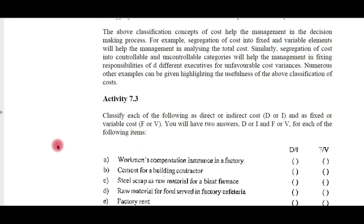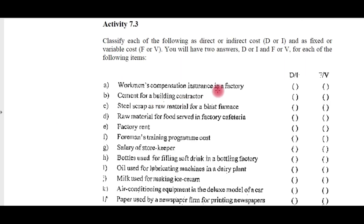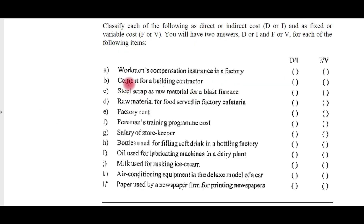Now let us identify whether certain activities are direct or indirect costs. Workman's compensation insurance in a factory — this compensation is not directly related to the output, so it is indirect labor cost.